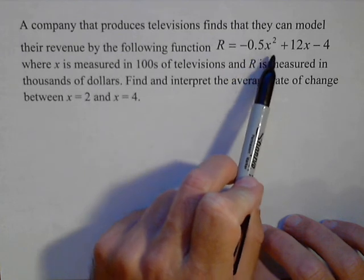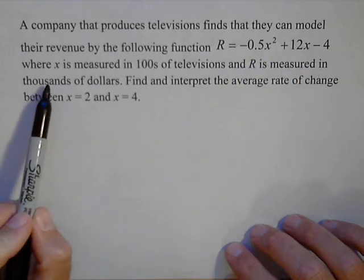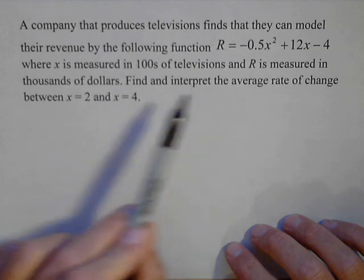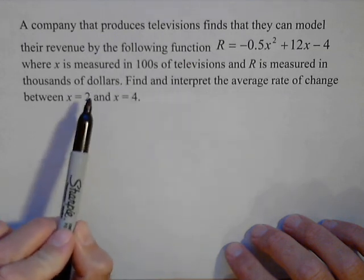negative 0.5x squared plus 12x minus 4, where x is measured in hundreds of televisions and R is measured in thousands of dollars, so this will be important.